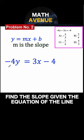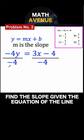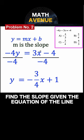Then to get y at the left, we divide both sides of the equation by negative 4, and we simplify. We cancel the negative 4. 3x divided by negative 4 is negative 3 over 4x. Negative 4 divided by negative 4 is positive 1.